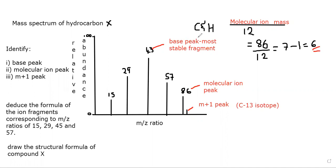For a hydrocarbon, whatever the molecular ion mass is, divide it by 12, write only the whole number, ignore the decimal, and subtract 1 from the answer. Whatever answer you get after that is the number of carbon atoms in our compound. So our compound has 6 carbon atoms.